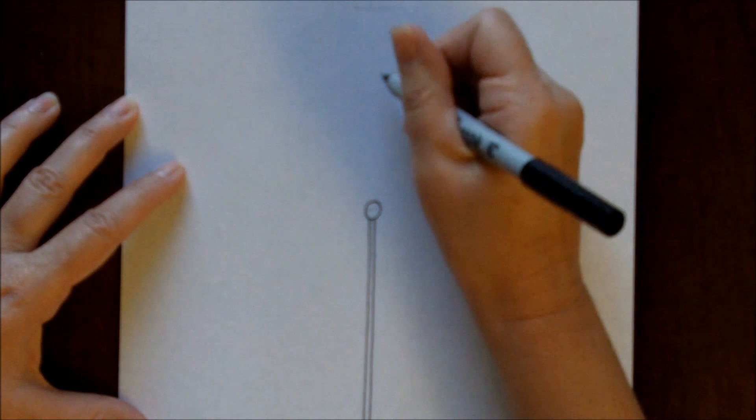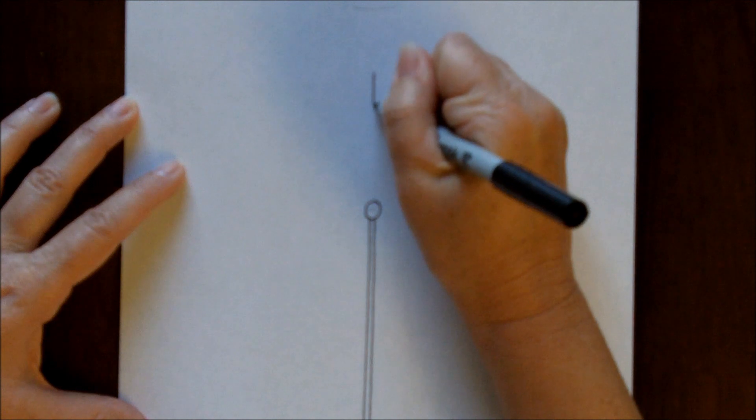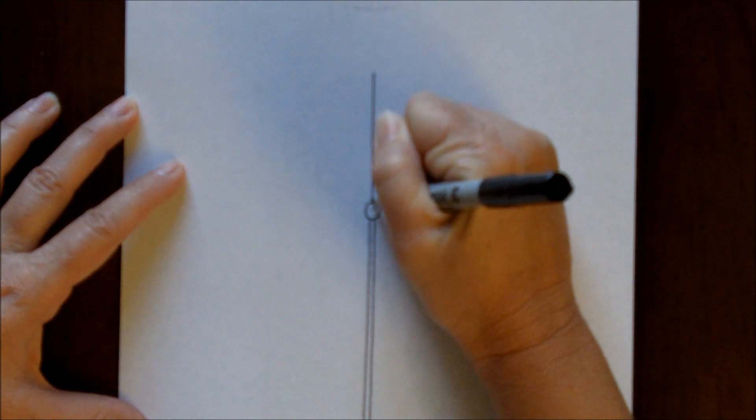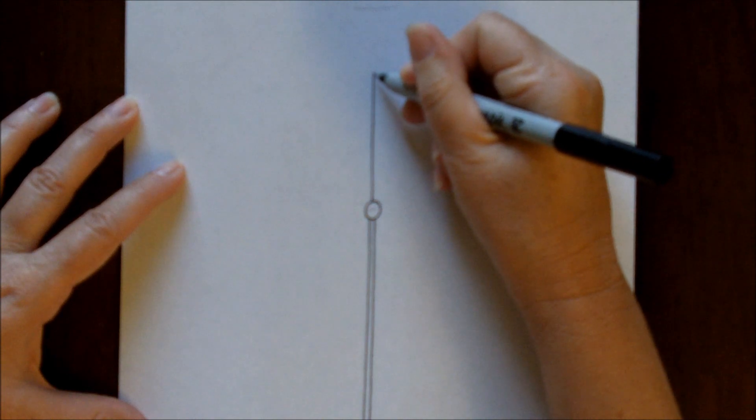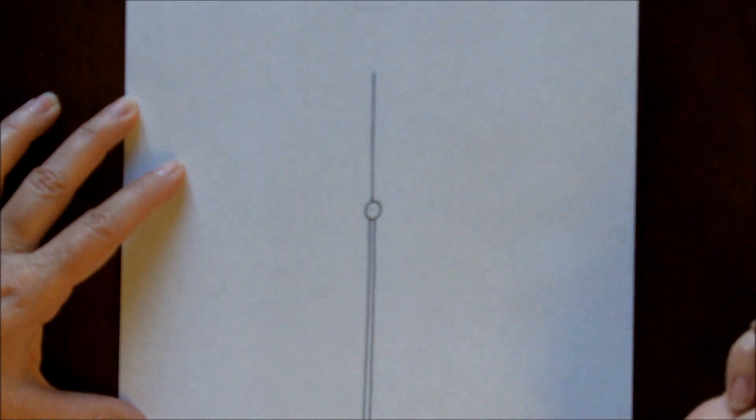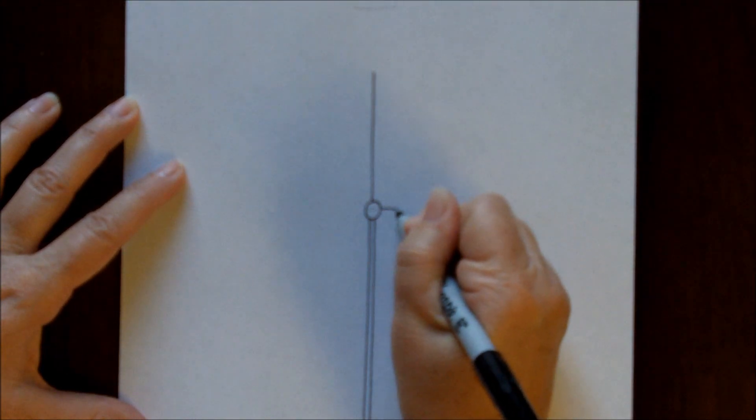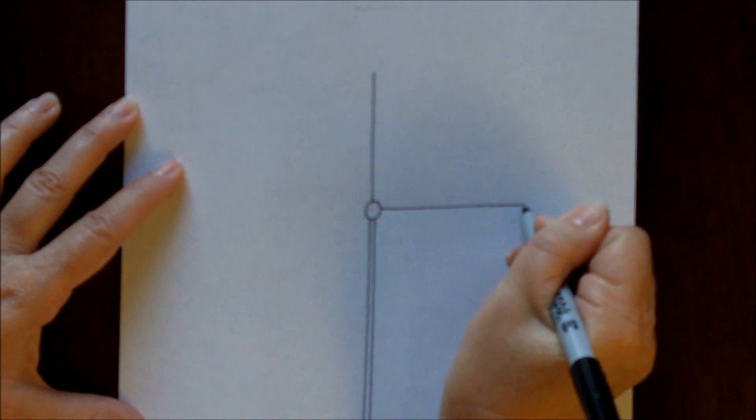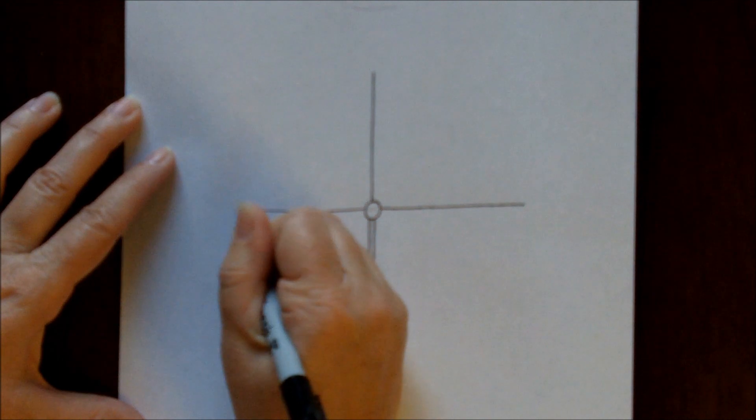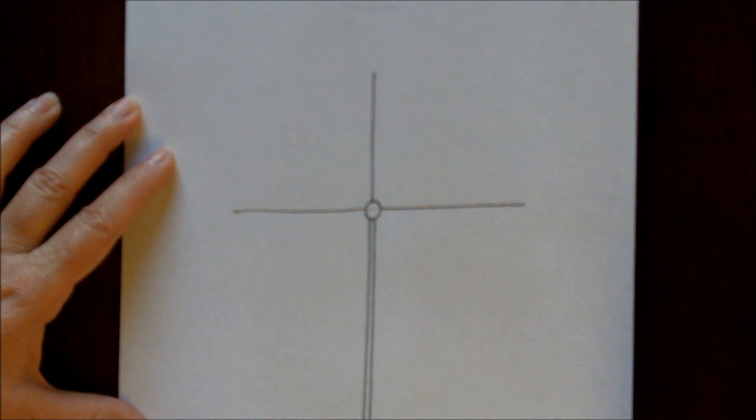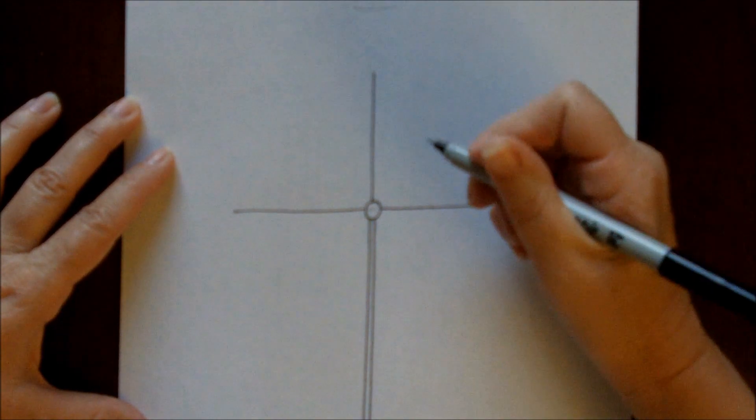Now what you'll want to do is make a straight line coming down from probably about 3 inches up right into your circle, and then you'll want to come out about 3 inches. Come out the other side about 3 inches.